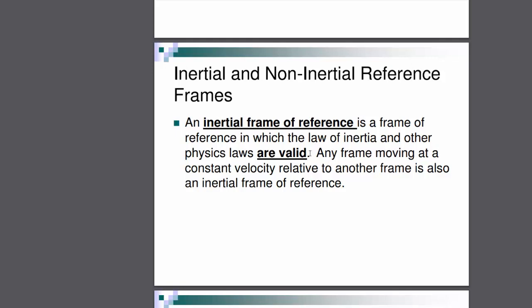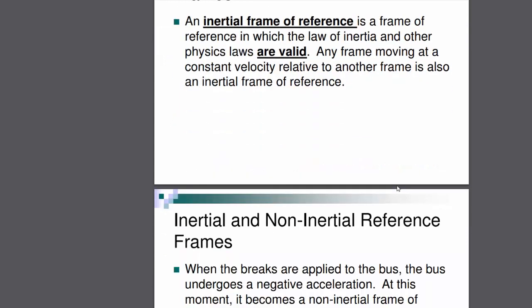If Newton's first law holds — when the body is at rest, it stays at rest — then it is an inertial frame of reference. Any frame moving at constant velocity relative to another frame is also an inertial frame of reference. For example, if the bus is moving at constant velocity, then it will be an inertial frame of reference.